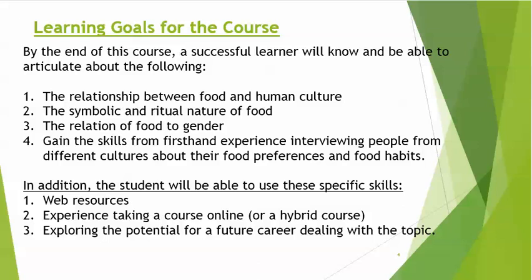The learning goals for the course: by the end of this course, a successful learner will know and be able to articulate about the following. One, the relationship between food and human culture, the symbolic and ritual nature of food, the relation of food to gender, and gain the skill from first-hand experience interviewing people from different cultures about their food preferences and food habits. In addition, you'll also be able to develop specific skills about using web resources, experience taking a course online, and exploring the course as a potential career dealing with this topic.